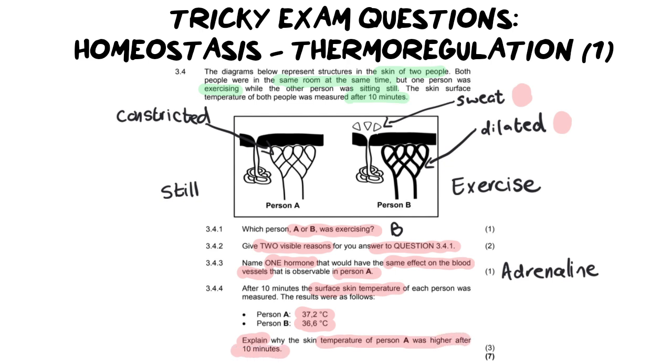It says explain why the skin temperature of person A was higher after 10 minutes. Now the first thing matrics I want to say to you is this: Do not talk about person B at all.